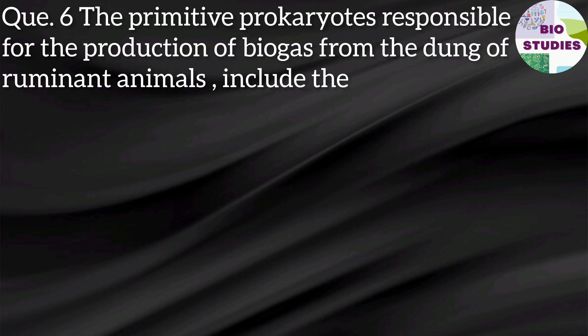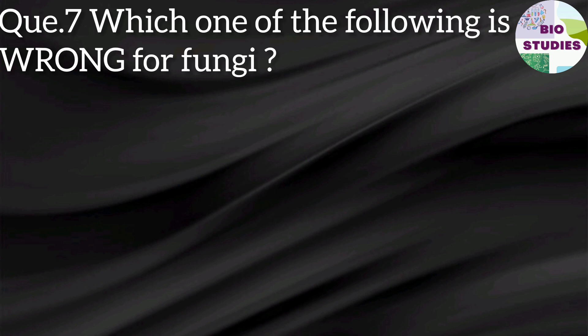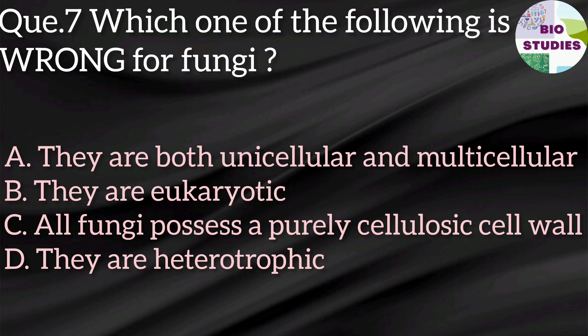Next question: the primitive prokaryotes responsible for the production of biogas from the dung of ruminant animals include — we already discussed a similar question where methanogens were the answer. Methane-producing bacteria, which is a type of archaebacteria. So here also the answer is methanogens.